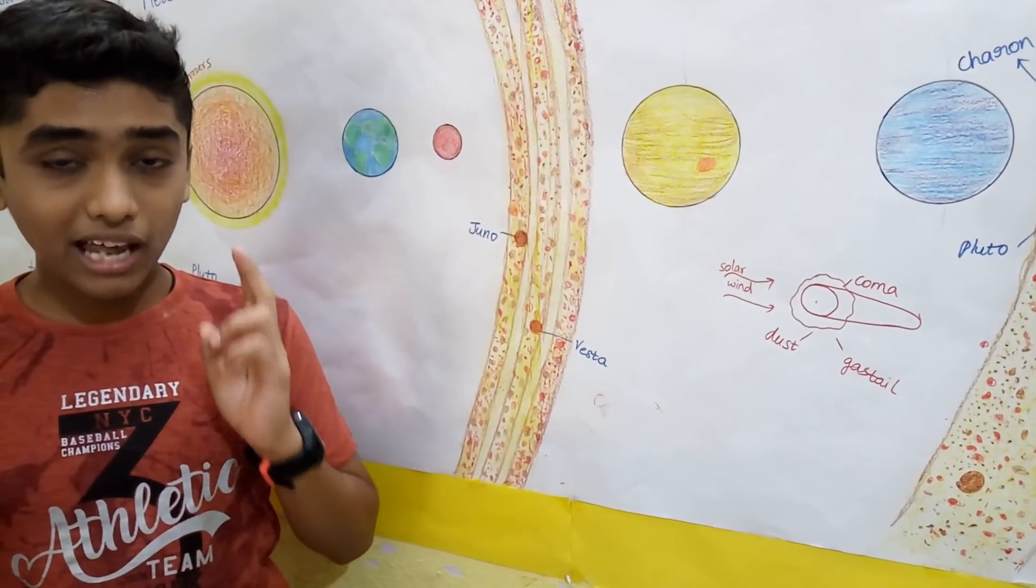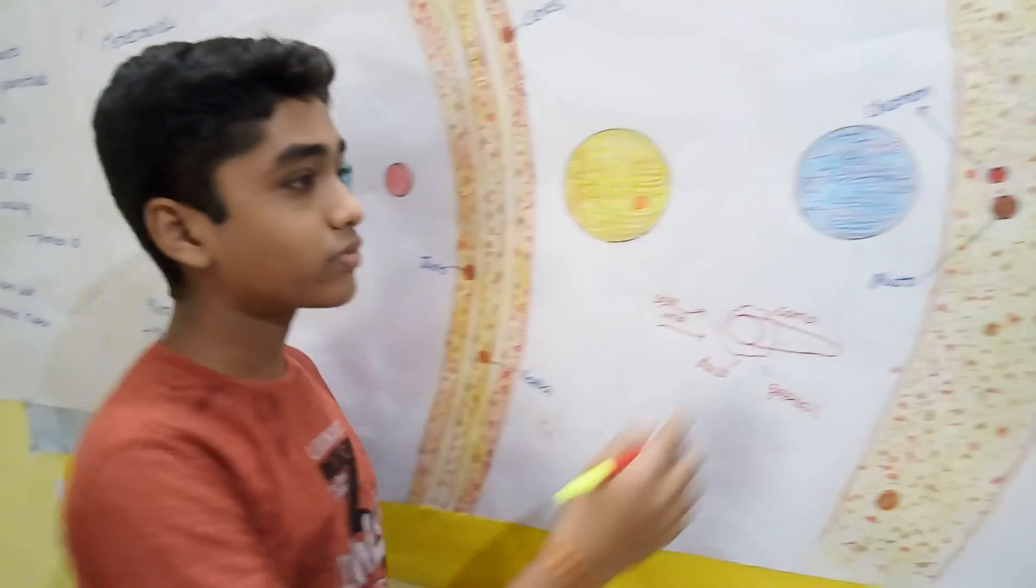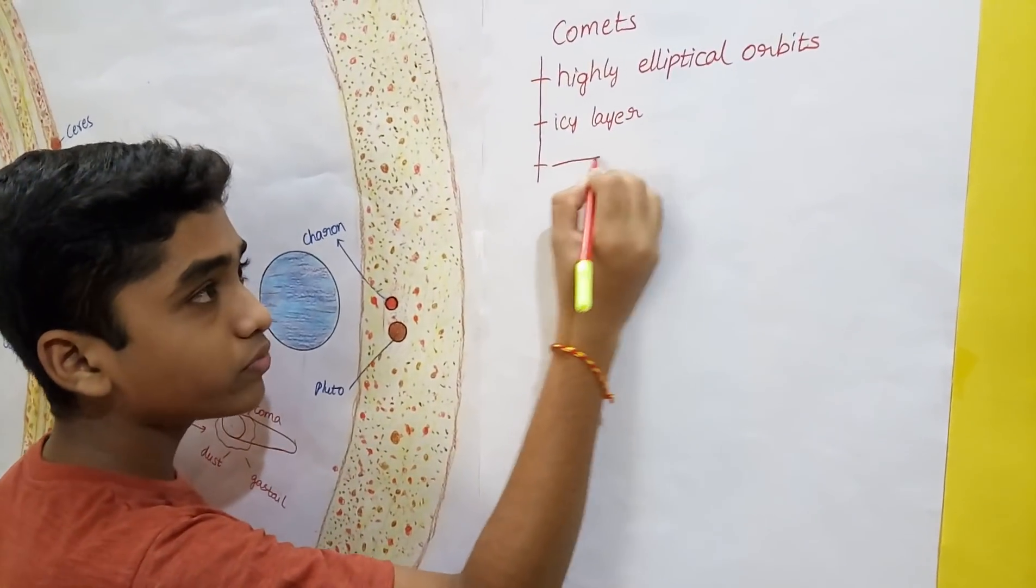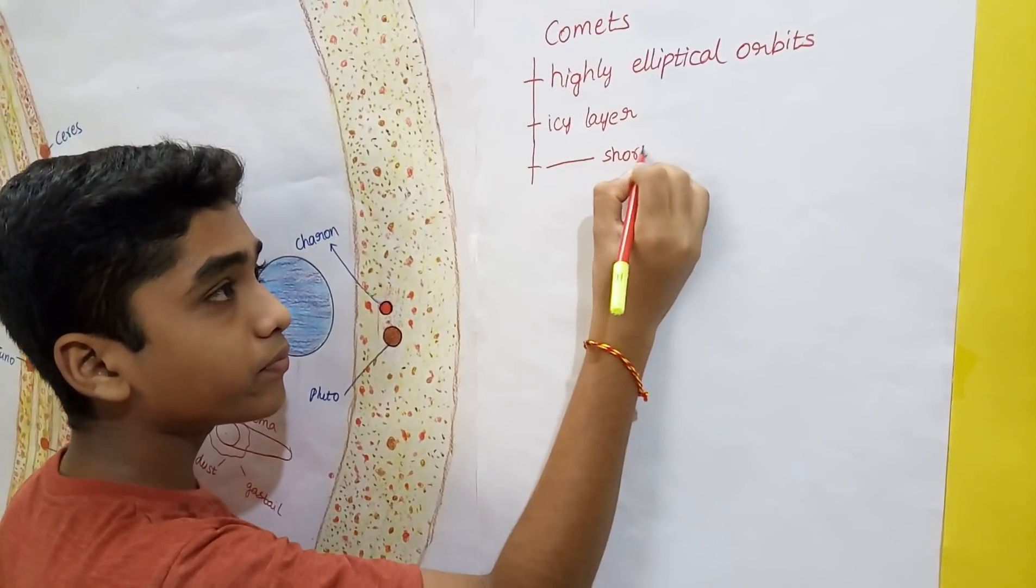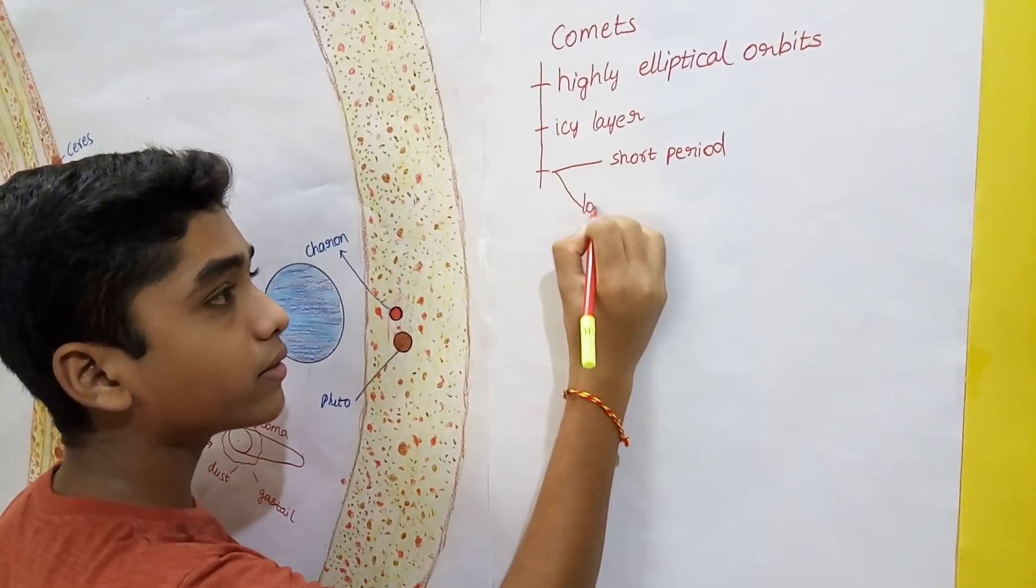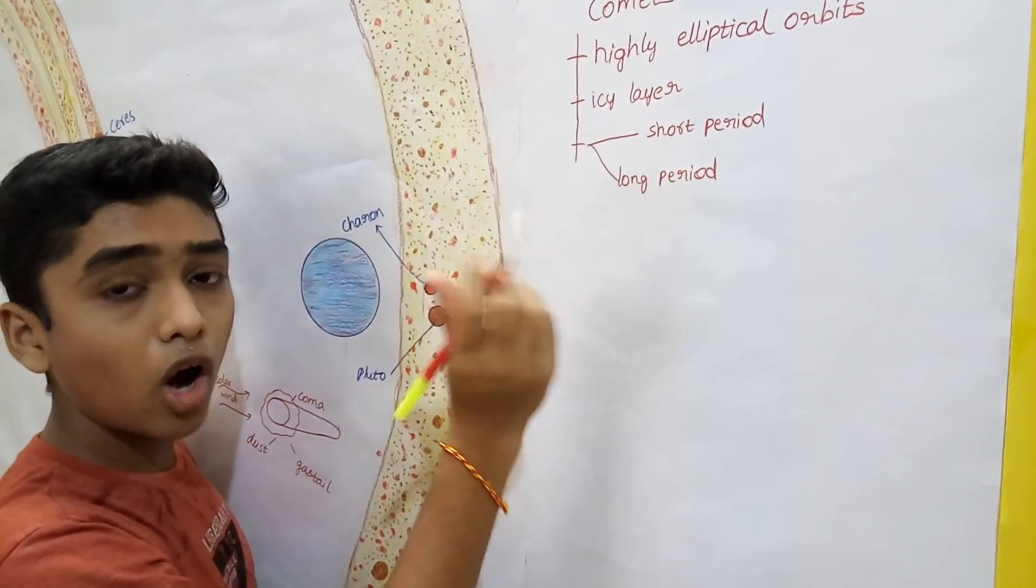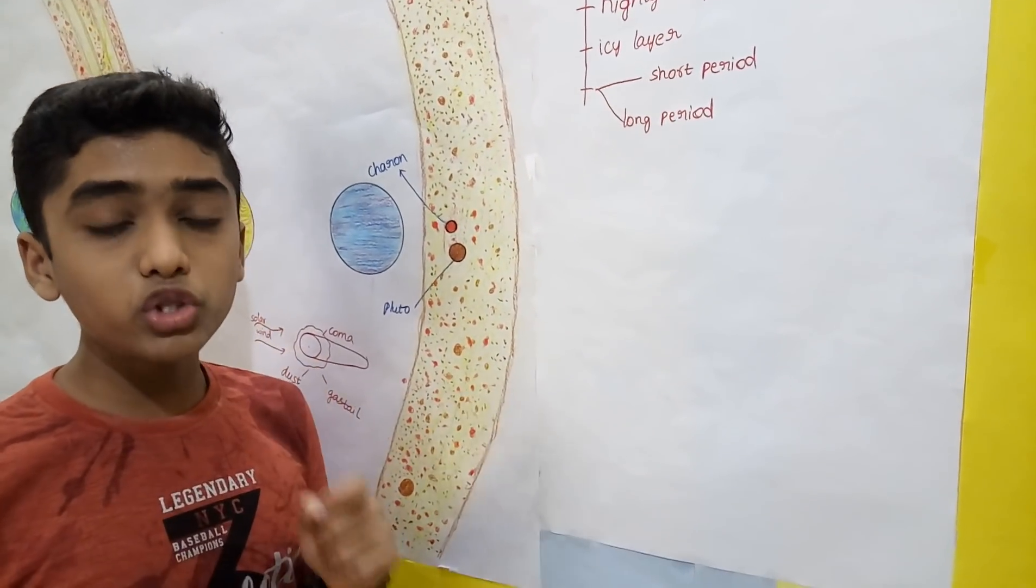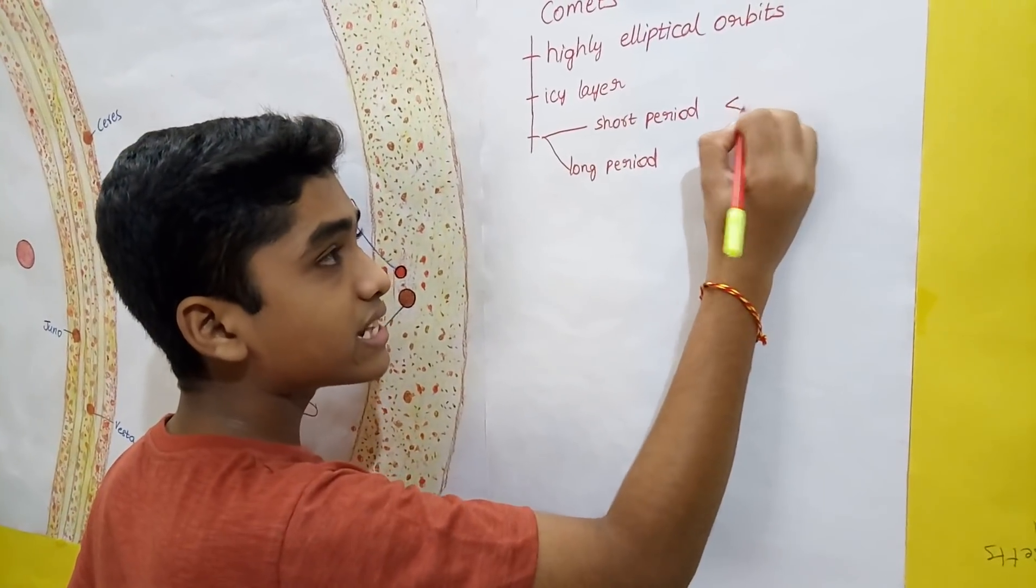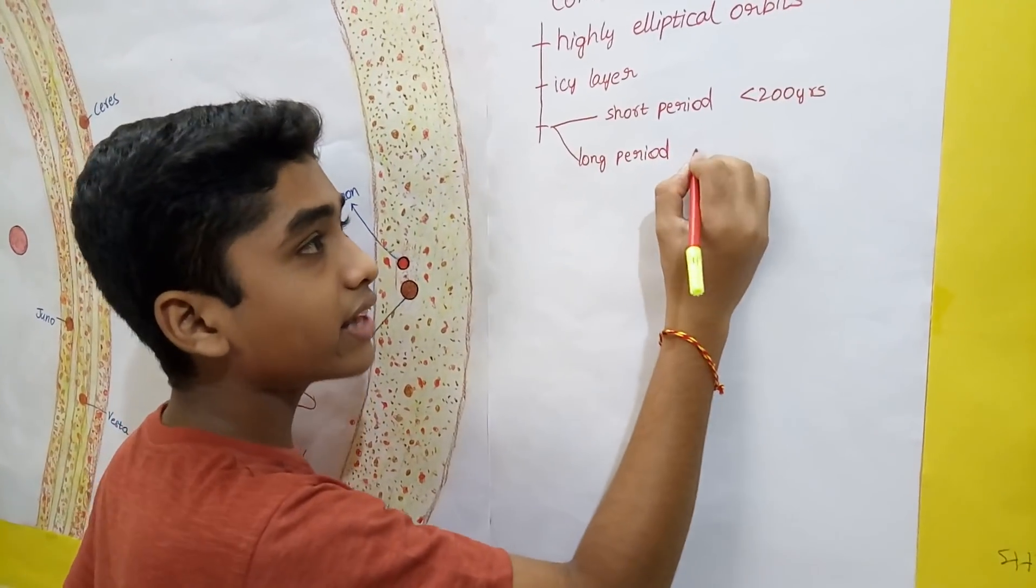Comets are classified into two types: short period comets and long period comets. Short period comets are the comets whose revolution time is less than 200 years, and long period comets greater than 200 years.